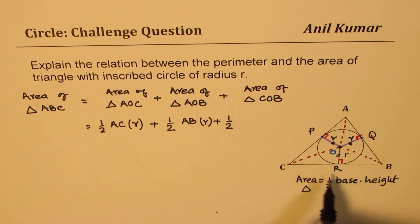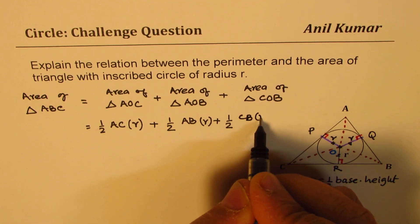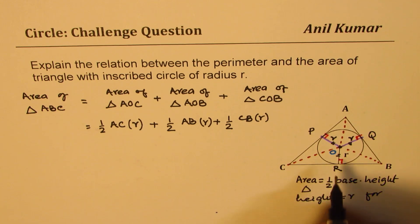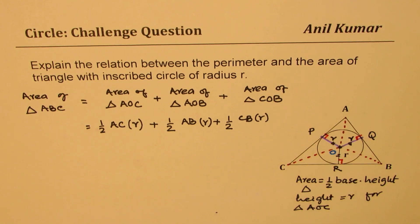Third one is half of CB times the height, which is R. So in this particular case, height equals to R for triangle, like below AOC, AOC.